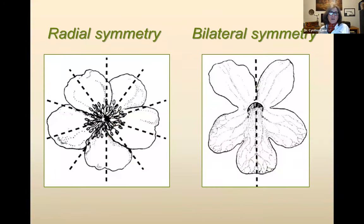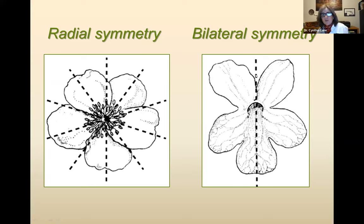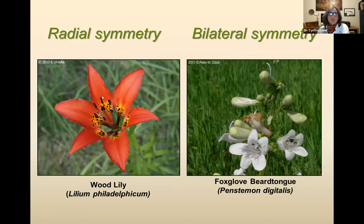Another important thing to know about flowers is symmetry. Radial symmetry is like a mandala — you can draw a line through pretty much any petal and both sides will be the same. Bilateral symmetry is where you can only draw one line down the middle for the two halves to match, like a person's face. A wood lily has radial symmetry — you can draw a line anywhere and it'll all be the same — whereas a foxglove has bilateral symmetry, where there's only one line you can draw to get mirror-image halves.